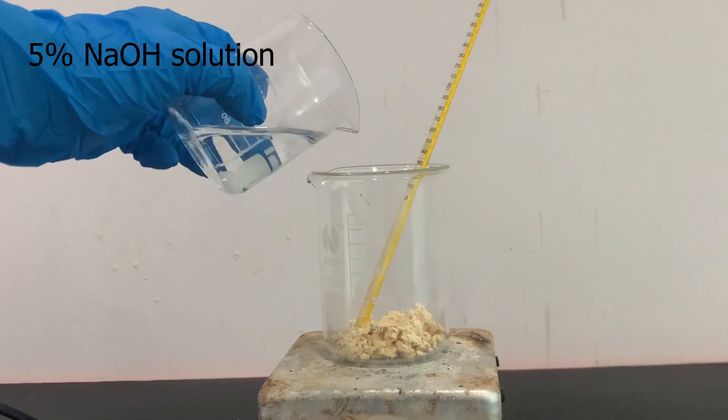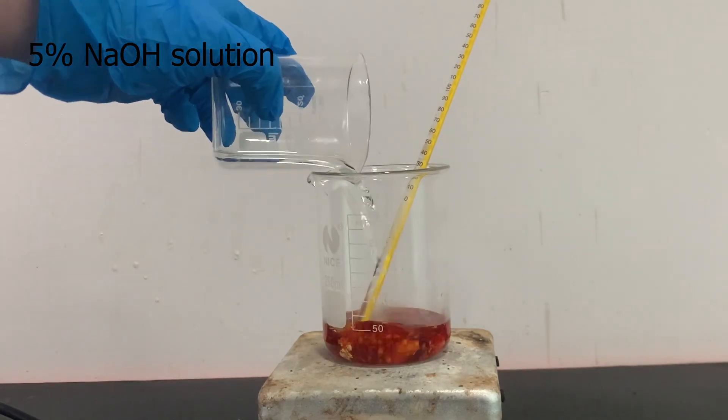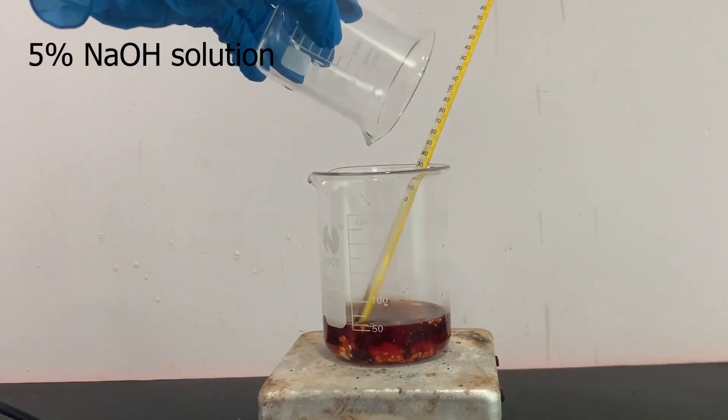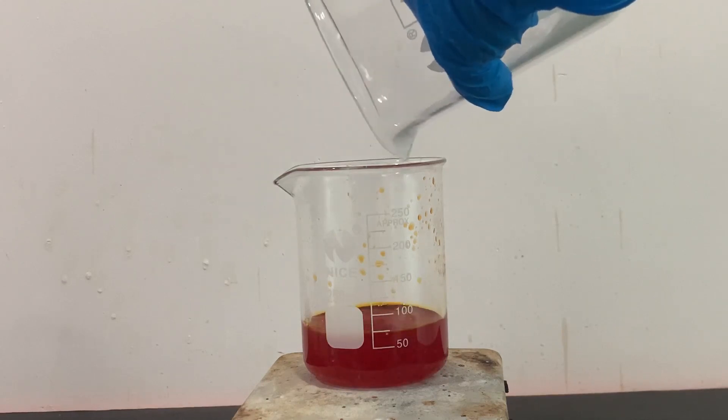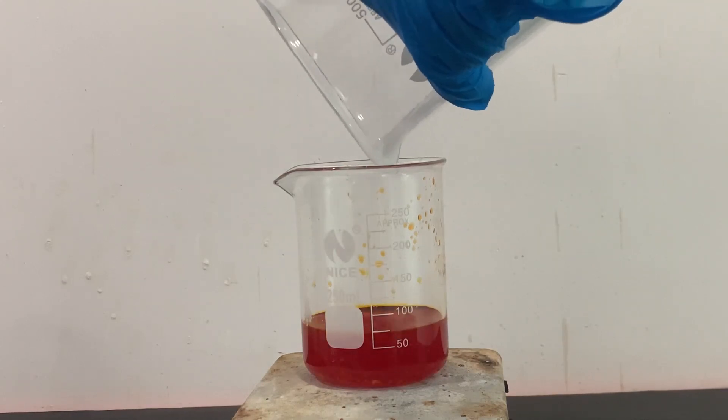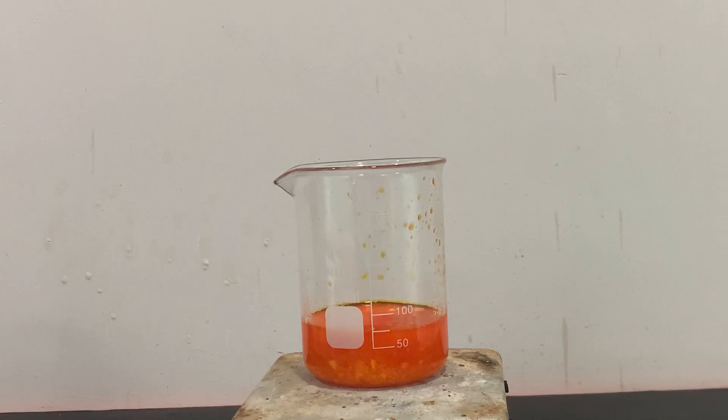The 3-nitrophthalhydrazide is transferred to a beaker and I dissolved it in 50 milliliters of a 5% sodium hydroxide solution. Once everything is dissolved, I started adding 25 grams of sodium dithionite. This will cause the color of the solution to change from dark red to a yellow.